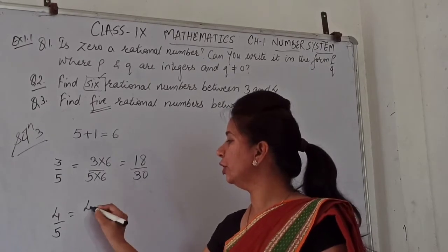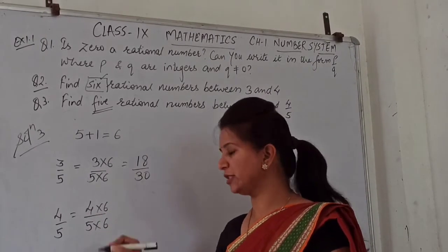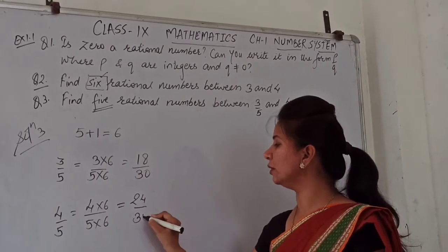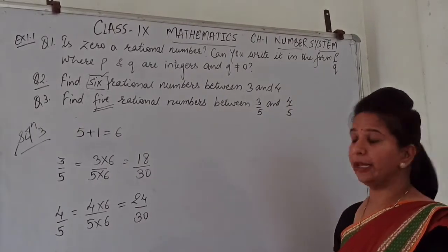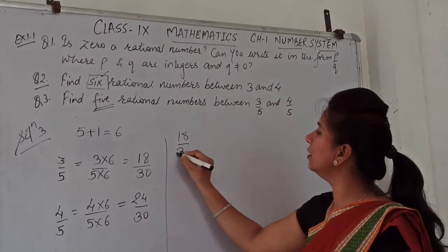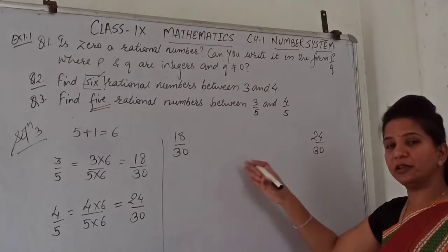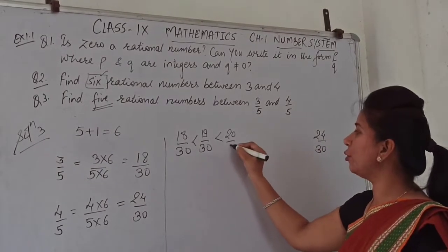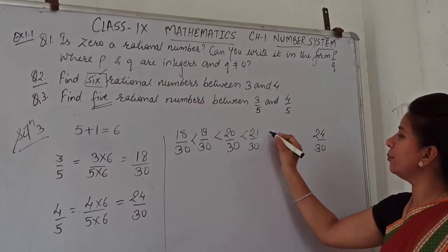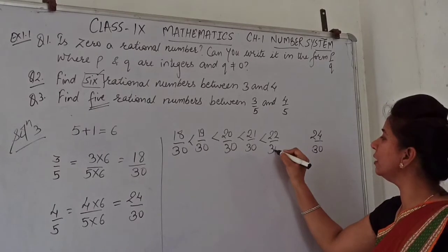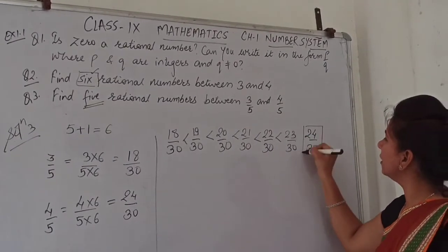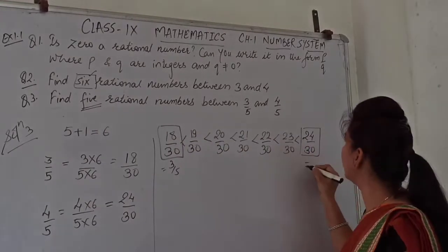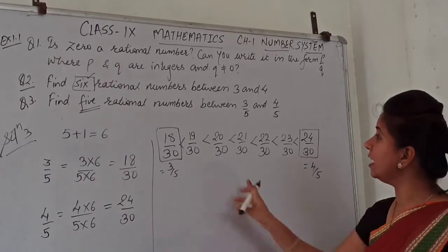Similarly, for 4 upon 5, multiplying numerator and denominator by 6 gives 24 upon 30. Now between 18 upon 30 and 24 upon 30, the rational numbers are: 19 upon 30, 20 upon 30, 21 upon 30, 22 upon 30, and 23 upon 30. The given boundary numbers are 3 upon 5 and 4 upon 5.